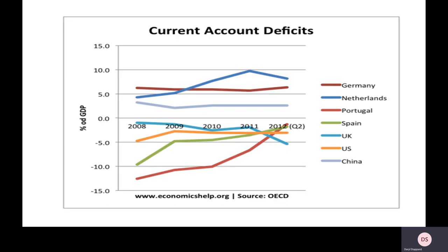For international comparison, countries such as Germany and Holland run current account surpluses — their inflows exceed outflows. The UK has the biggest current account deficit as a percentage of GDP among the countries shown. America and Spain also have current account deficits.